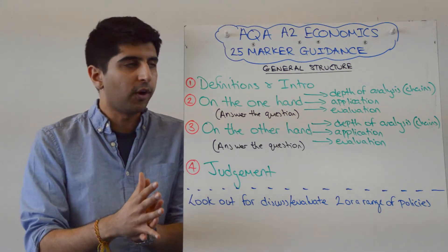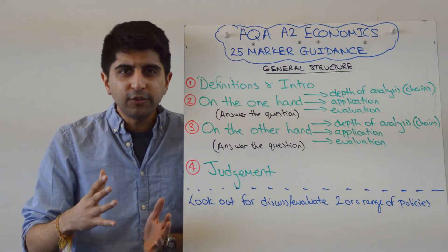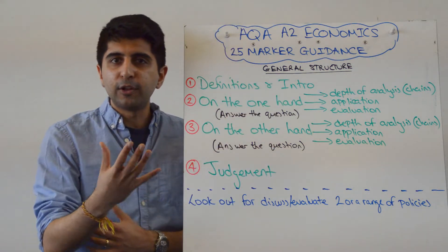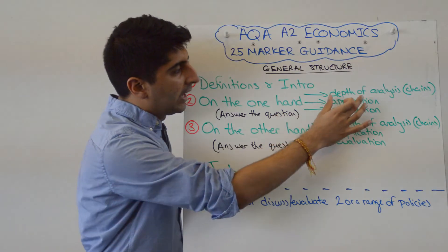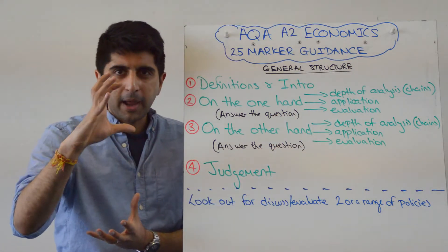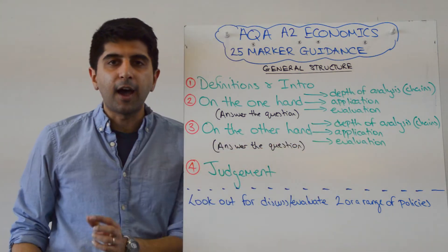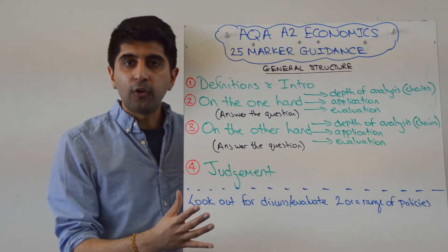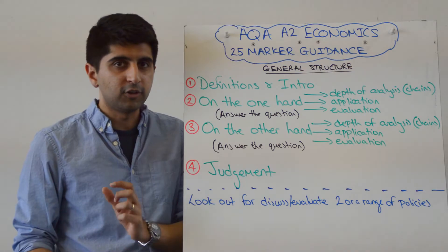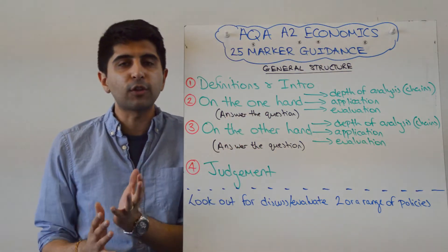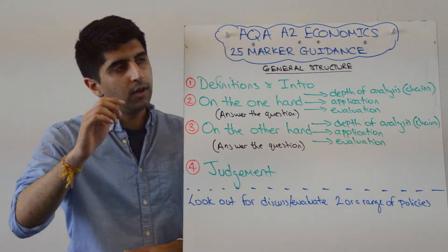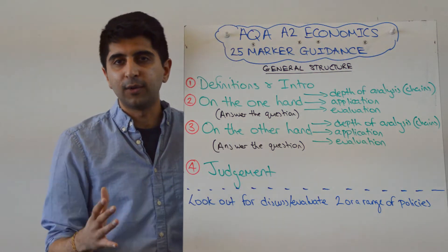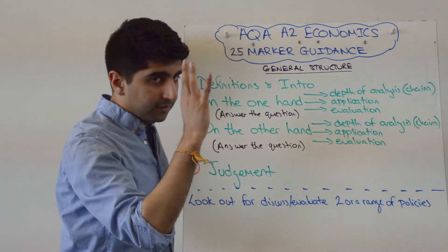Answer the question on the one hand. The number of points you make on the one hand is dependent on the question, but if it's just you discussing one thing, you may be looking at making two points on the one hand — two solid paragraphs with depth of analysis, 100%. The same kind of chain of analysis that you did in your 15 marker or your 10 marker before, you need to be doing it again. Would you include a diagram? Absolutely, if that's relevant for your answer. That helps answer the question — go for it. Make sure it's fully labelled, it's detailed, and crucially, you refer to it in your writing. Otherwise, it's pointless.